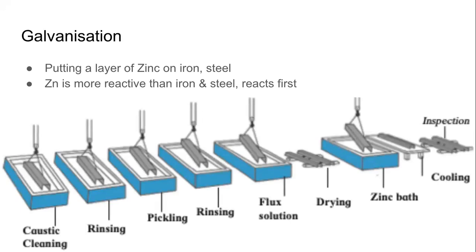First one is galvanization. Essentially, in this method we put a layer of zinc on the metal we want to prevent from corrosion. Galvanization is used to prevent corrosion in the case of iron and steel. Iron is a metal; steel is not a metal — steel is an alloy of iron and carbon. When we add carbon to iron, it makes it even stronger.